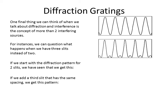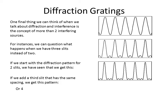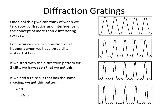If we add a fourth slit we get two secondary maxima while the primary remains, and these secondary peaks keep getting smaller and smaller. Going to a fifth slit adds another secondary, so there are more minima and more secondary maxima appearing between the primary peaks.